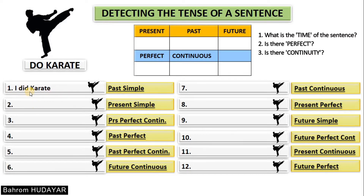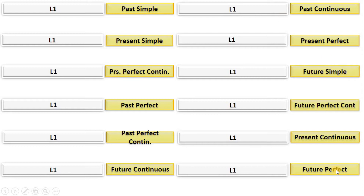Briefly, you make a sentence in your native language, ask these three questions, and you will be able to find the tense of your sentence. I hope you have written 12 sentences, found their tenses, and written them in order. Now we are going to start making sentences in English. We have 12 tenses and 12 sentences in your native language.